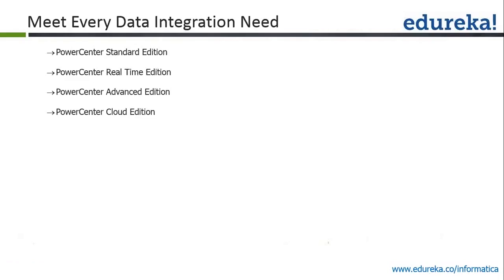You install once and then based on the licensing feature you can use the standard features, the real-time features, or the advanced features. High availability is part of the real-time edition, and session on grid and server on grid are part of the advanced edition. The standard edition has only a single non-domain.